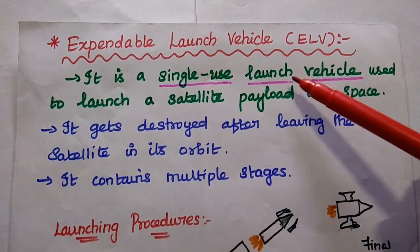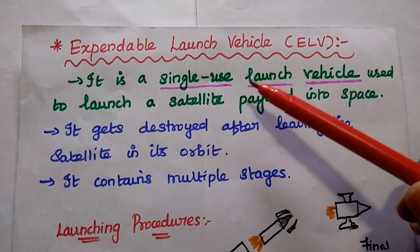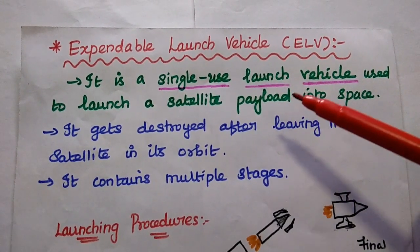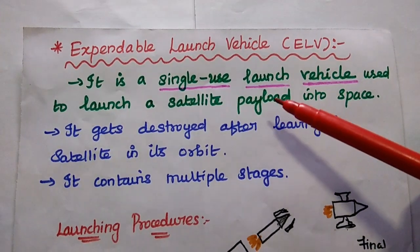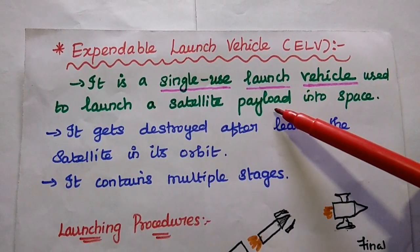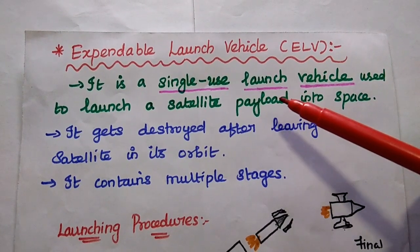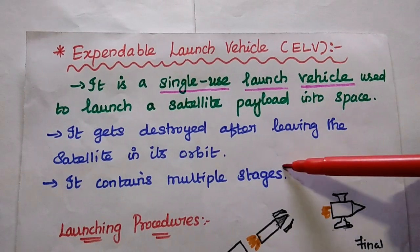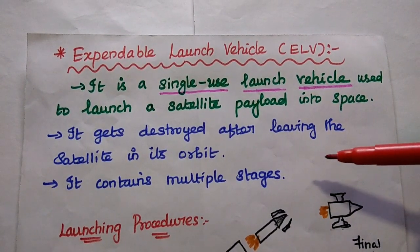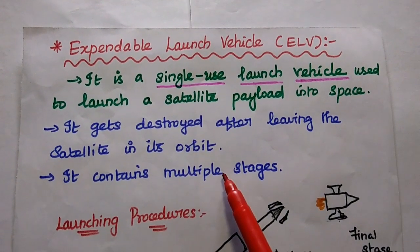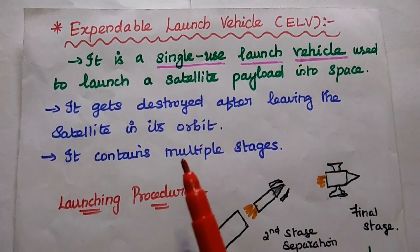The first type is expendable launch vehicle, ELV. It is a single-use launch vehicle which is used to launch a satellite payload into space. The payload is the satellite equipment which is used to provide the service. This vehicle gets destroyed after leaving the satellite in its orbit — once the task is completed, the parts of the vehicle are destroyed.